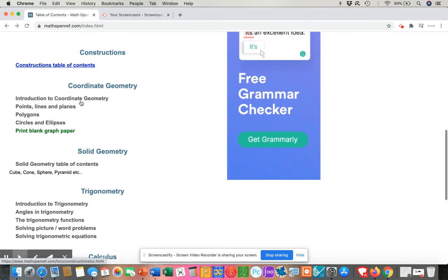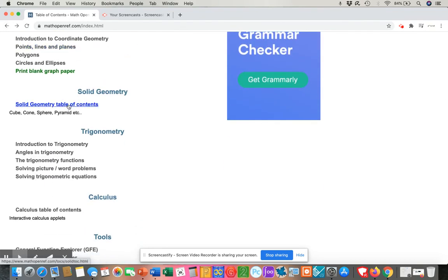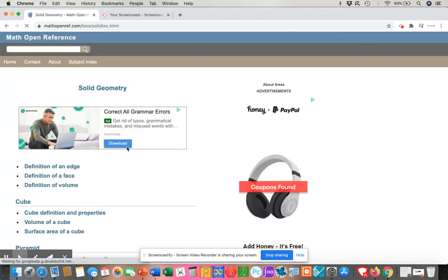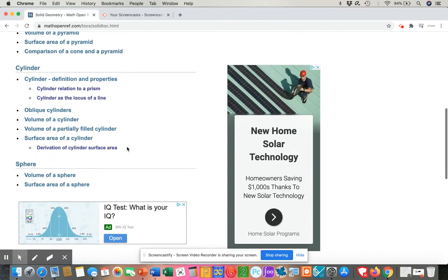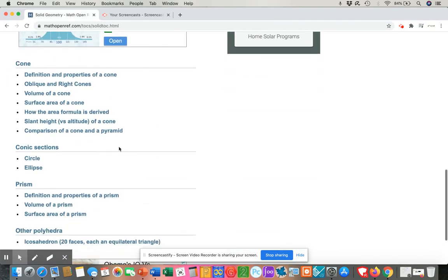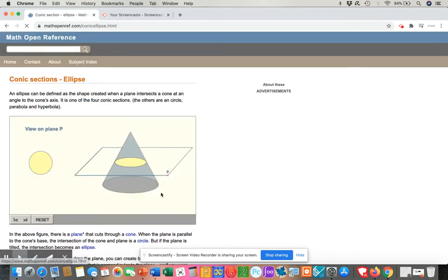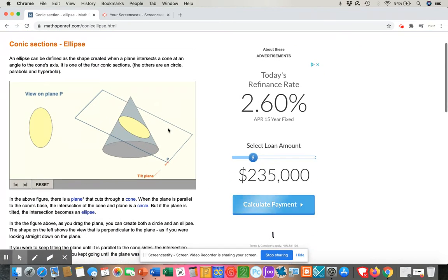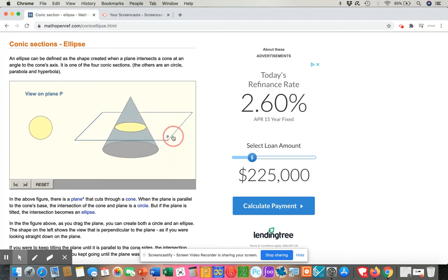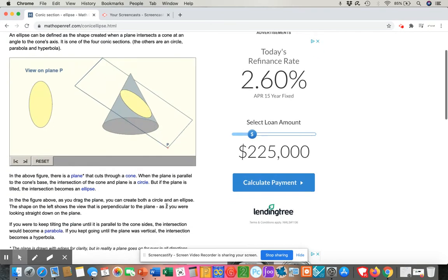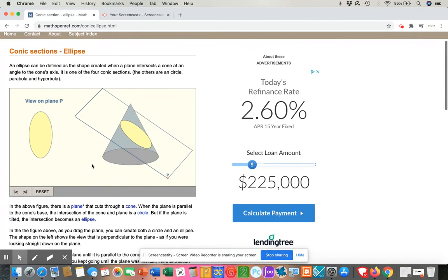And once again, notice that there's a lot of options for geometric constructions. All right, let me show you another one. So let's say that you were studying maybe in Algebra 2. You're doing conic sections. So let me show you the ellipse. So here, again, you have some information. And I really like how you could play with this and see how that circle turns into an ellipse. And, of course, you have some information in the applet.